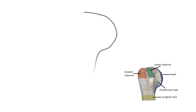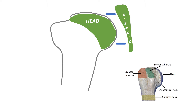This is the proximal part of the humerus. The head is directed medially and articulates with the glenoid cavity of the scapula. About one-third of the head sits in the glenoid cavity, forming a ball and socket joint.